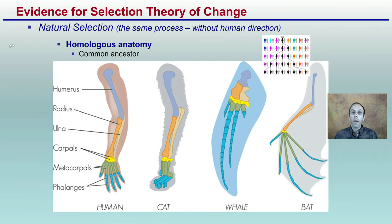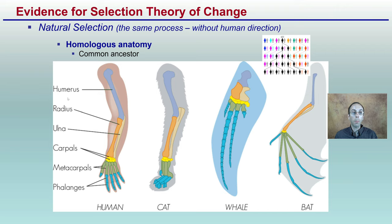We also have natural selection evidence through homologous anatomy. This is where there's a common ancestor. If we look at the human arm, the cat, the whale, and the bat — while they may all perform very different functions (grabbing, walking, swimming, flying) — they all have the same basic structure or anatomy. This is again evidence for the natural selection theory of change.